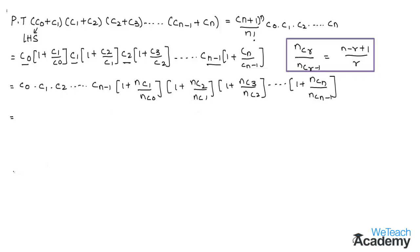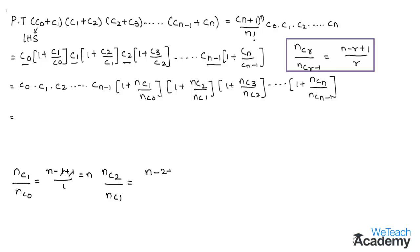Applying this formula, for nC1/nC0 we get r = 1, substituting: (n - 1 + 1)/1 = n/1 = n. For nC2/nC1 we get r = 2, substituting: (n - 2 + 1)/2 = (n - 1)/2.